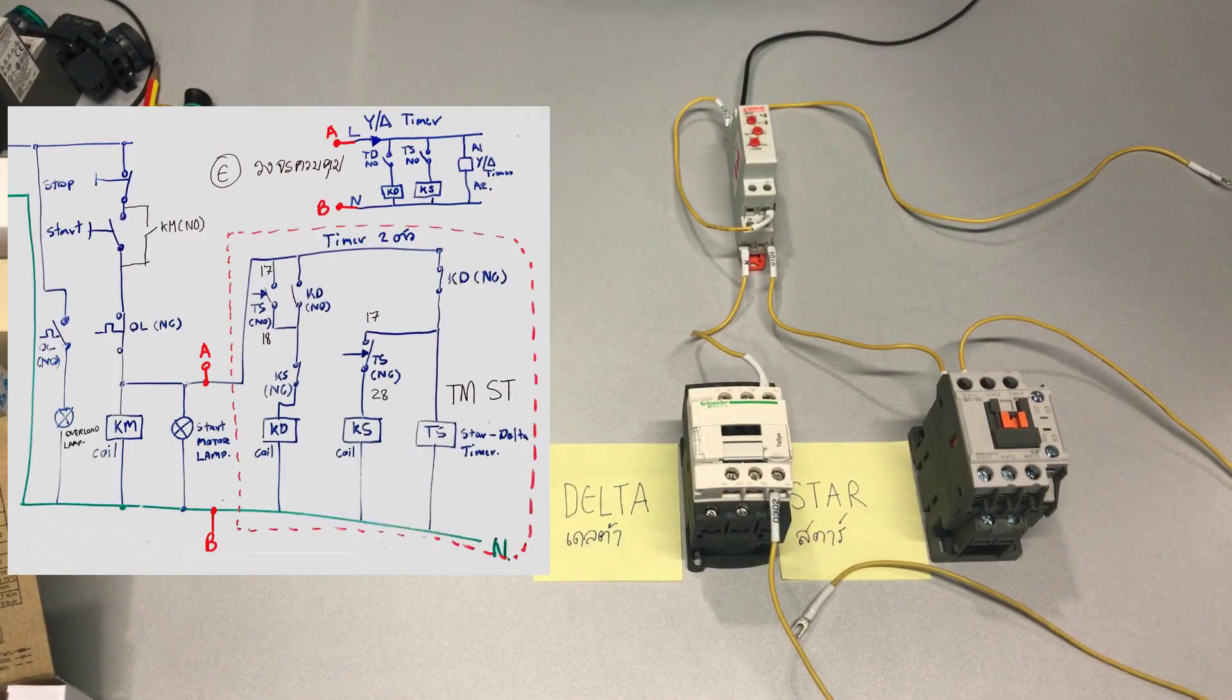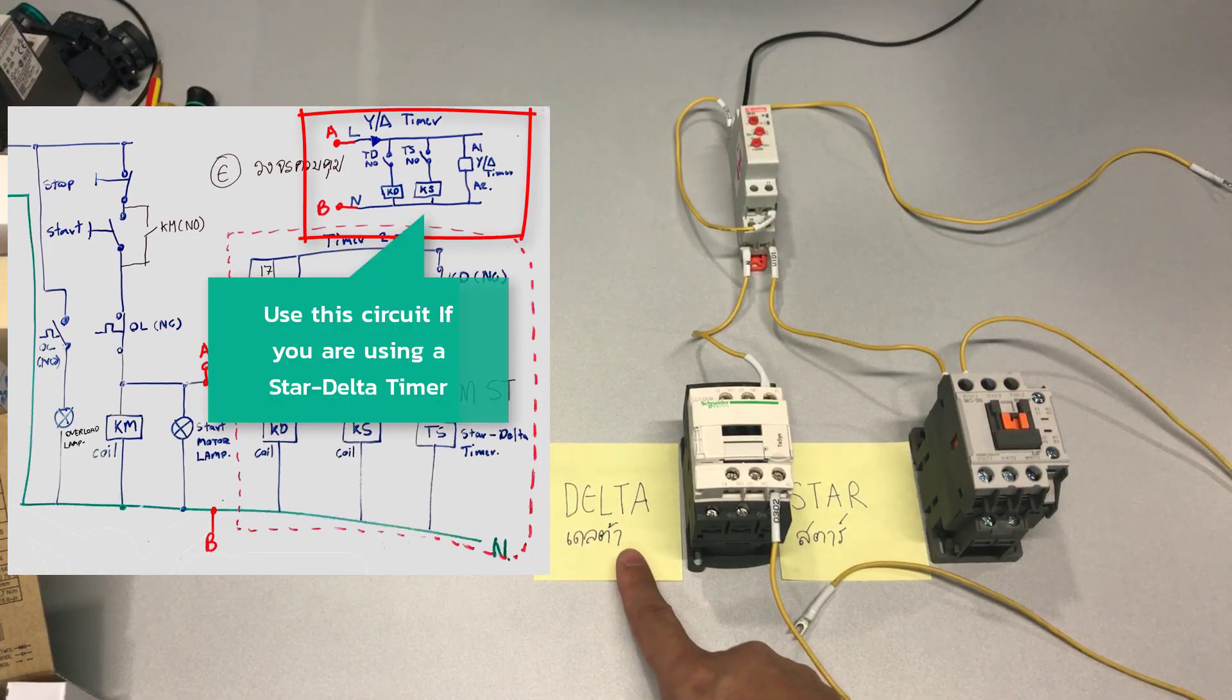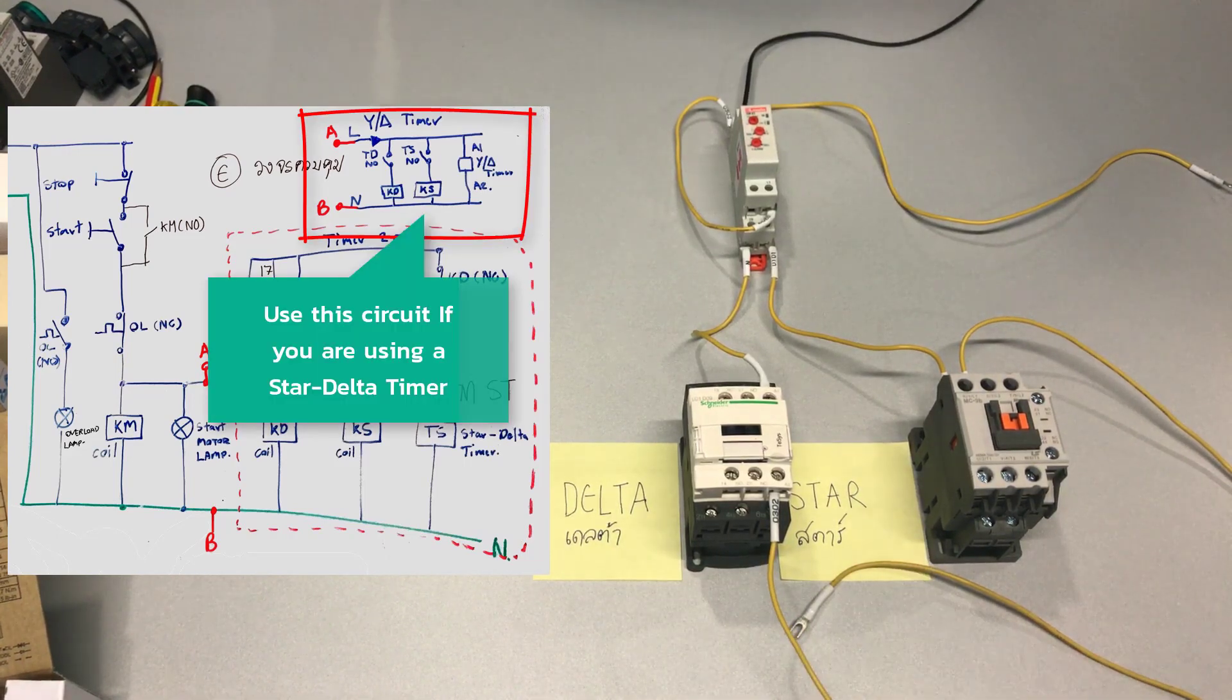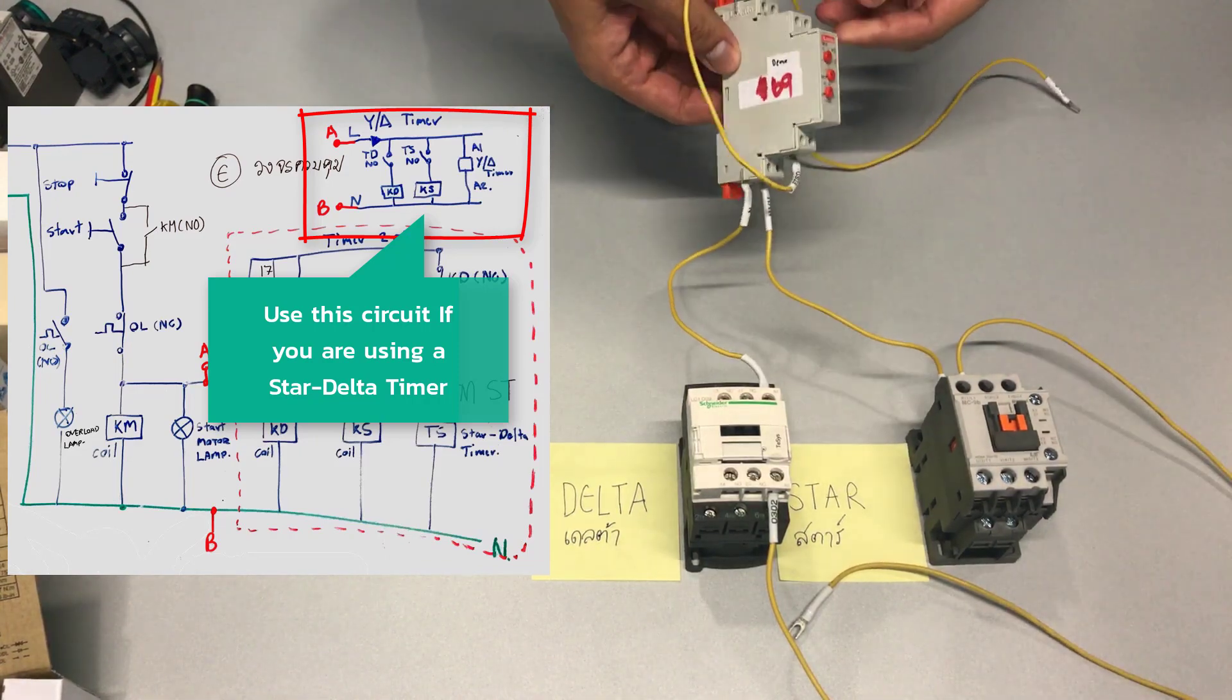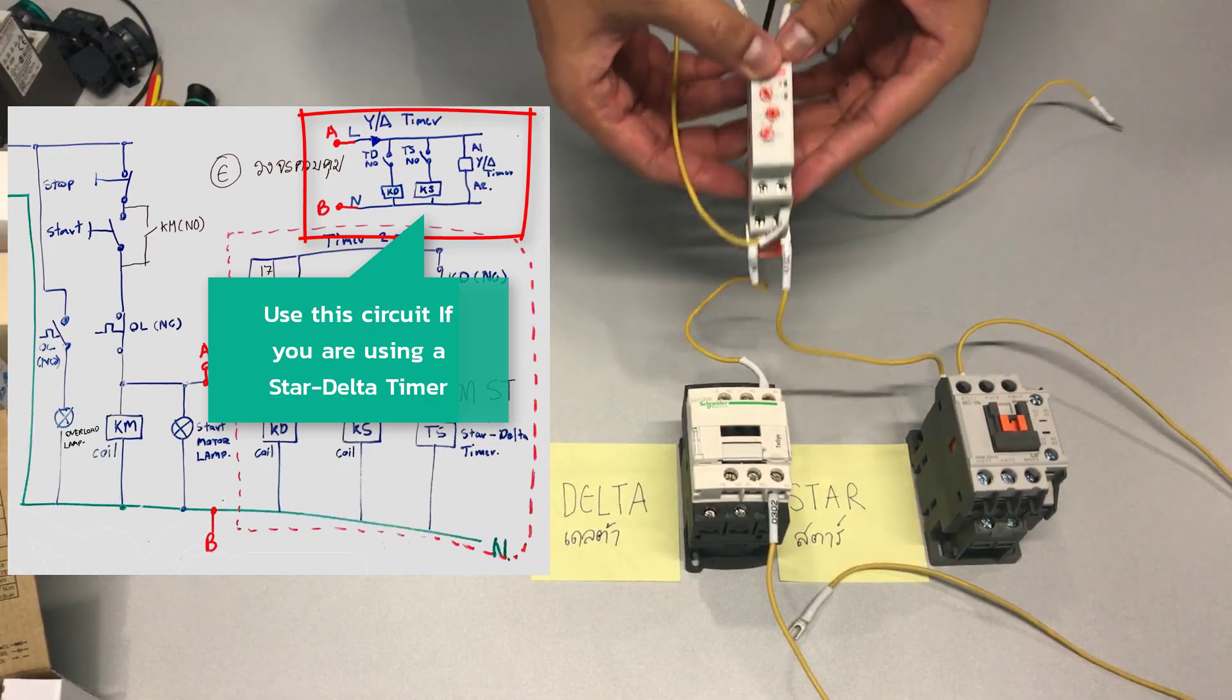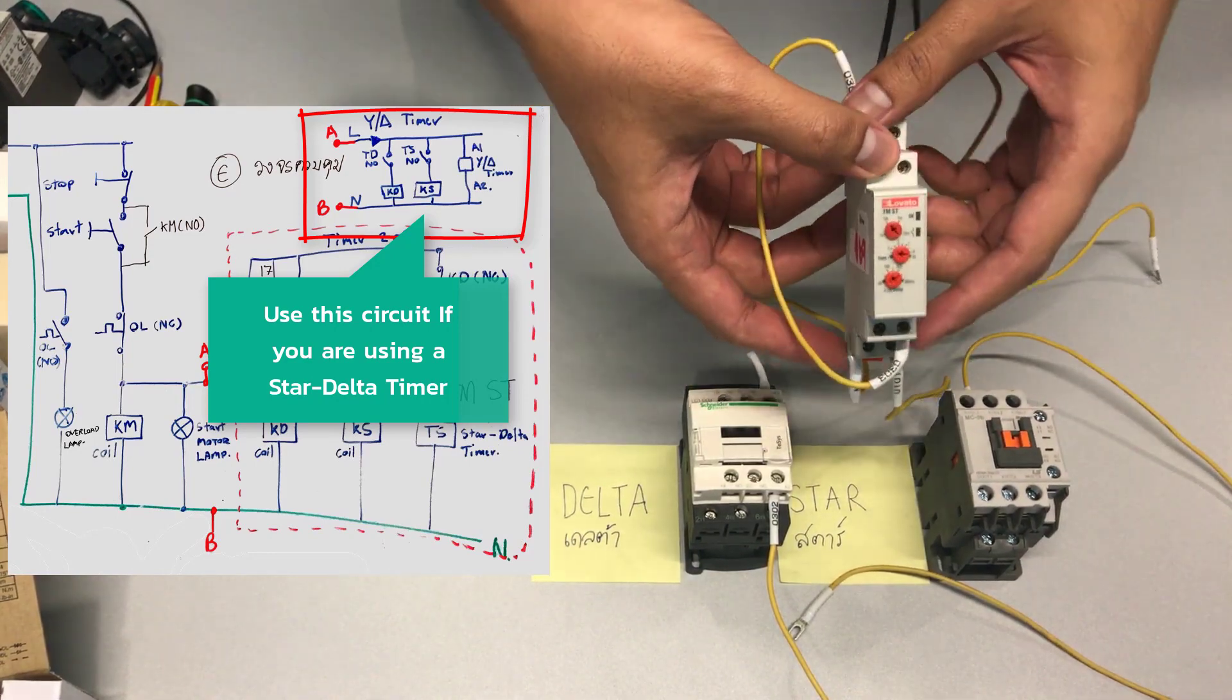Next, we'll be talking about wiring the timer to the delta and the star contactor. Okay, let's see here. This is the star delta timer. And the way we connect it is as follows.